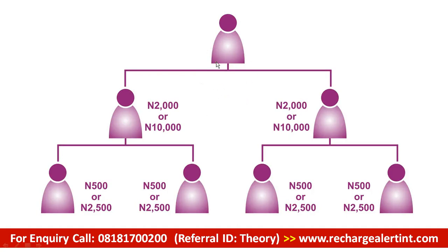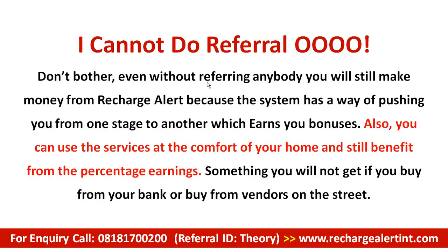This is the downline tree — you just need to bring two persons, everybody brings two persons, and it's very easy to cycle out. Once this is complete you go to the next stage. If you bring somebody to the Investor package you earn 2,000 naira; if they're joining the Boomer package you earn 10,000 naira. Even when the people you brought bring their own downlines, you still make money — 5,500 naira if they join Investor, 22,500 naira if they join Boomer. For those afraid of referring, nobody is forcing you.